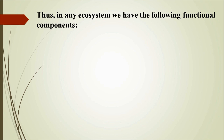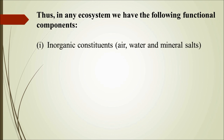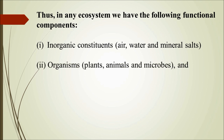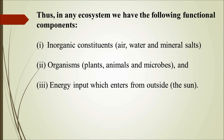In any ecosystem, the basic functional approach involves three things: first, inorganic constituents — air, water, minerals, salts; second, organisms — plants, animals, microbes, that is producers and consumers; and third, energy. The interplay between inorganic, organic, and energy — these three points — if you remember them, you understand the basic functioning of the ecosystem.